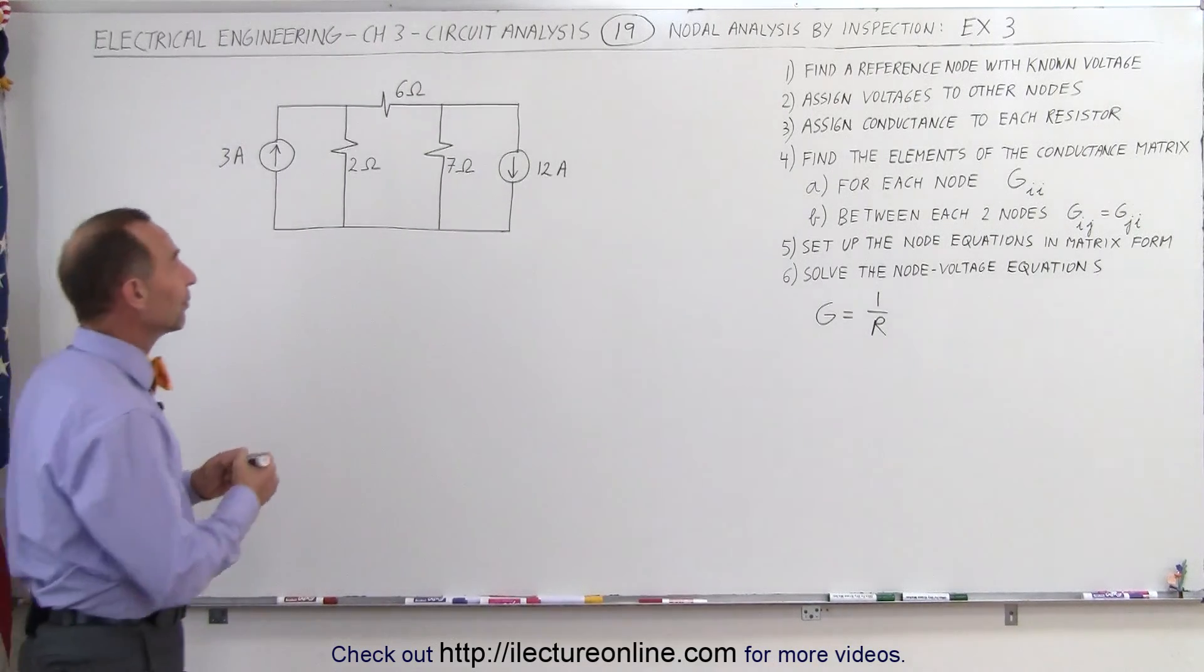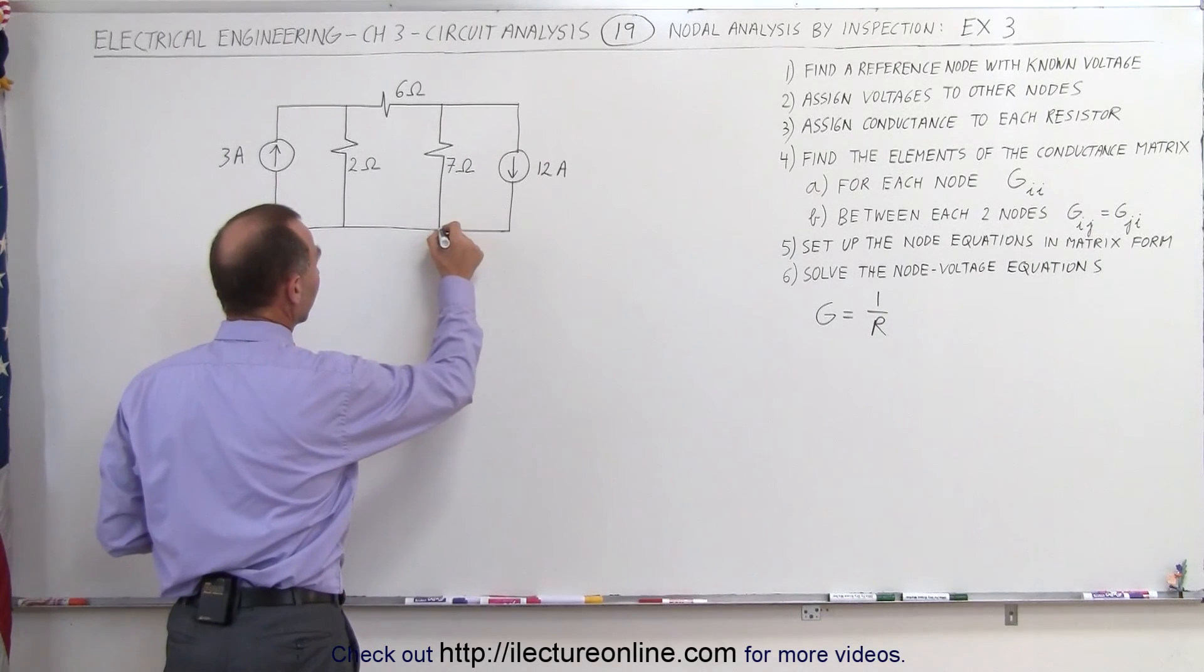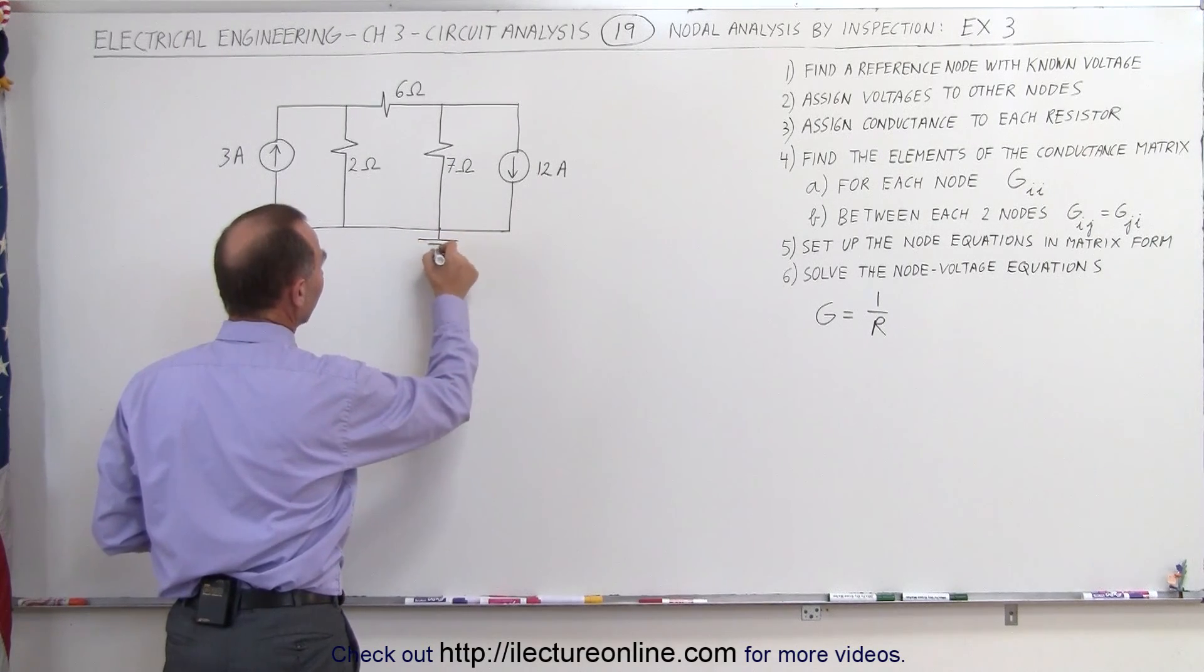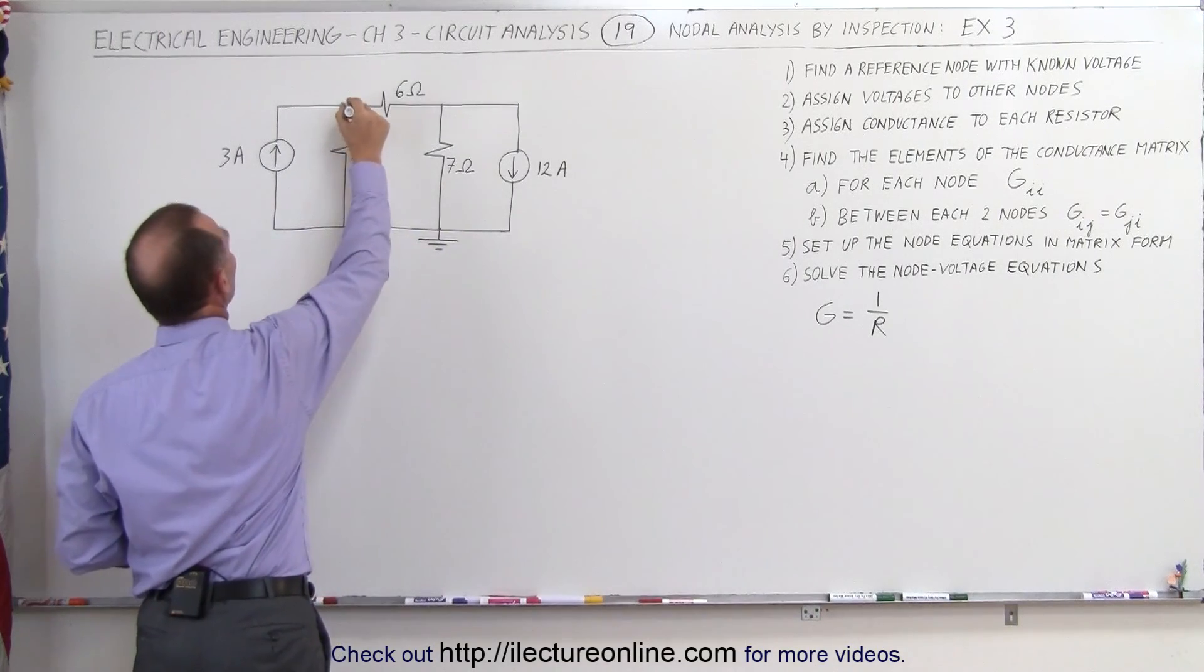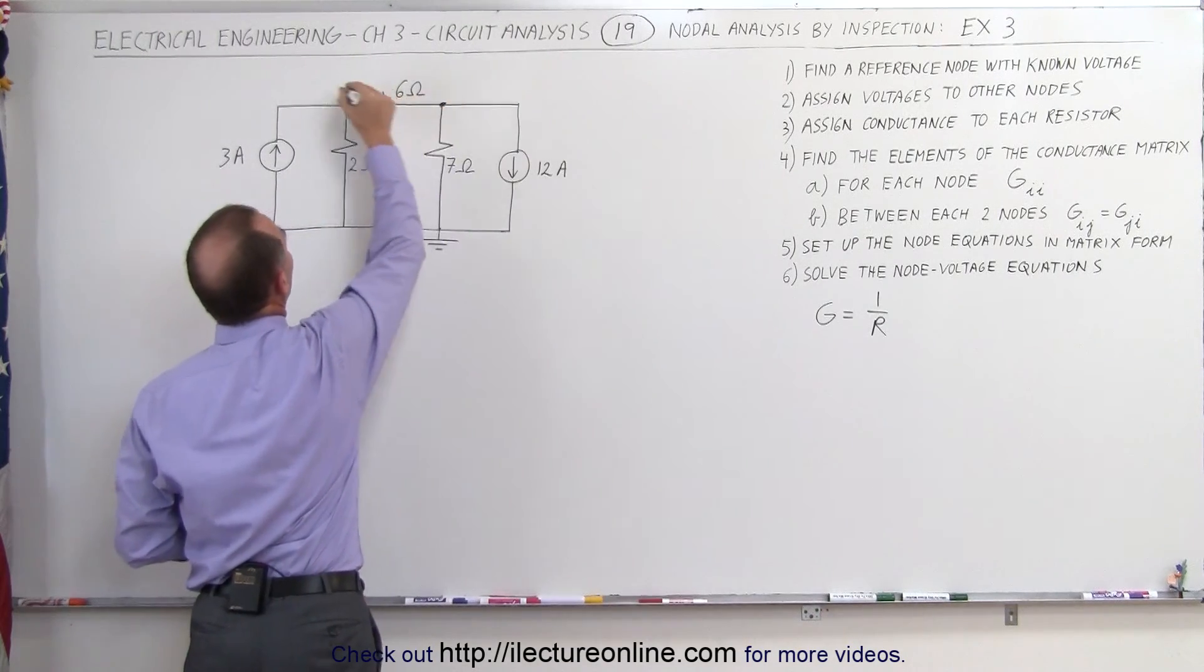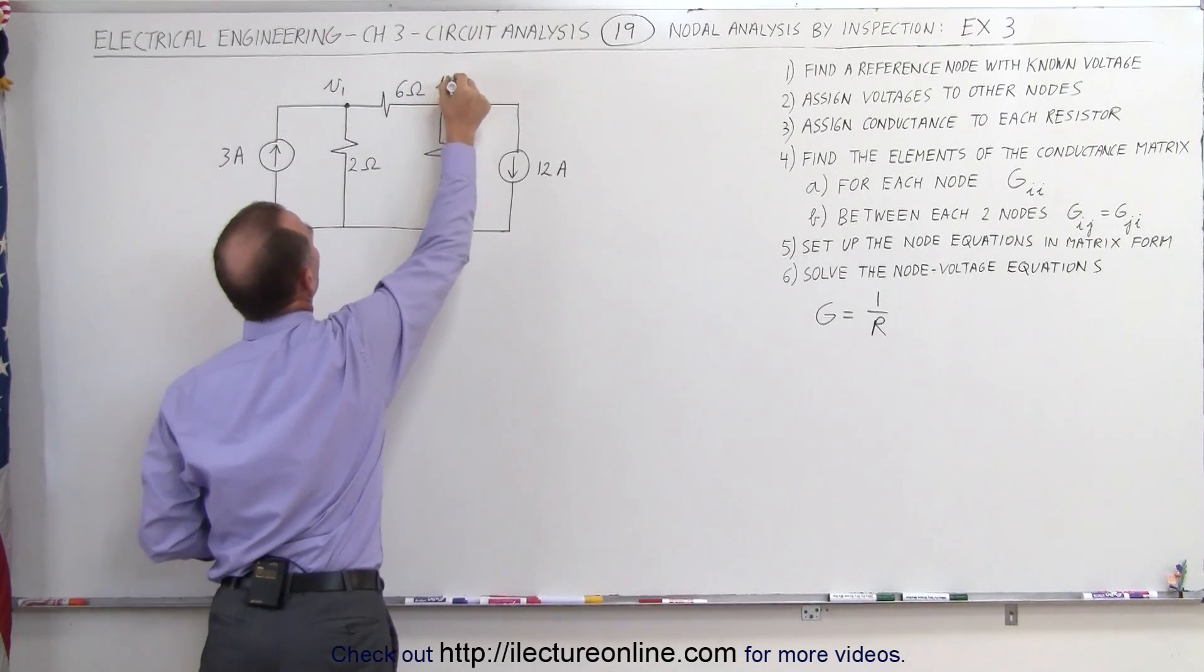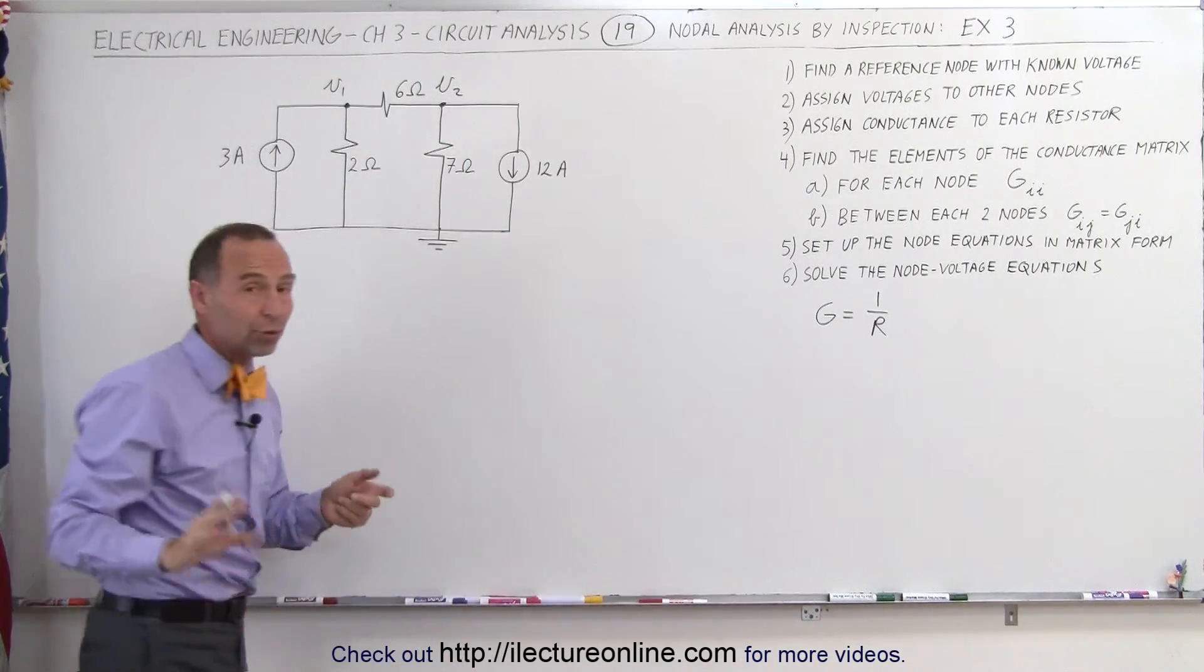First thing we do is find the reference voltage, so let's go ahead and just connect the bottom of the circuit here to ground, that's our zero volt reference. Next we apply voltages to the two nodes, so this becomes V1 and V2, those are the two unknown voltages we're trying to find.